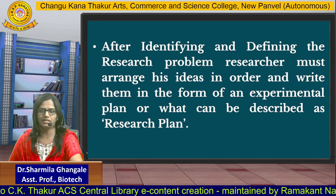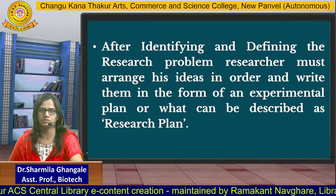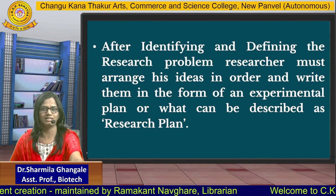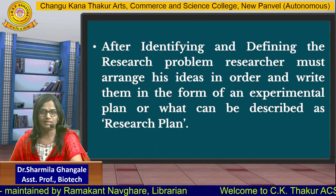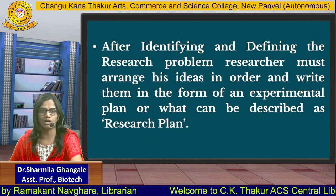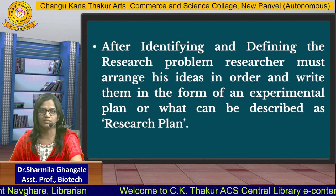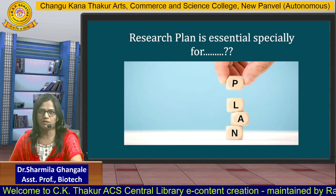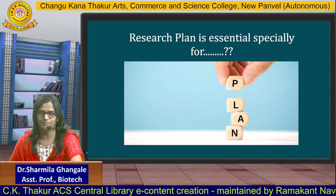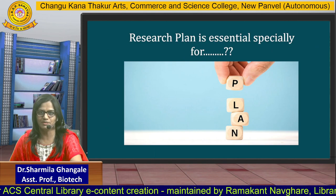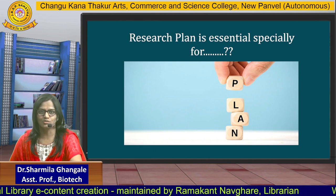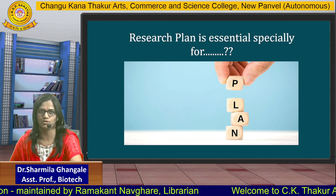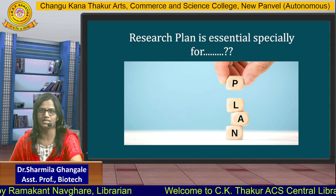After identifying and defining the research problem, the researcher must arrange his ideas in order and write them in the form of an experimental plan — what has been described as a research plan. Let us see what is meant by a research plan and how it has to be developed, what key components should be included. Research plan is essential; as everybody knows, if we fail to plan, we plan to fail. That is the reason why it is more essential for every research work that we should have some blueprint or plan in hand in order to proceed in a better manner.